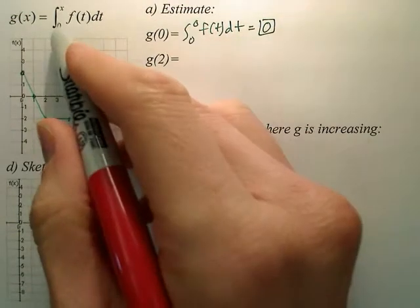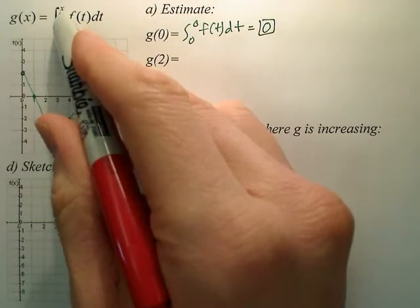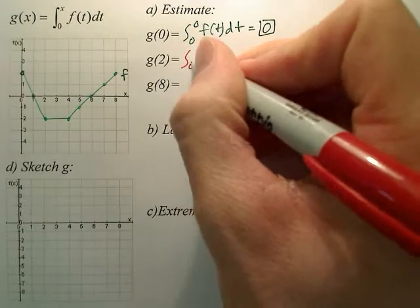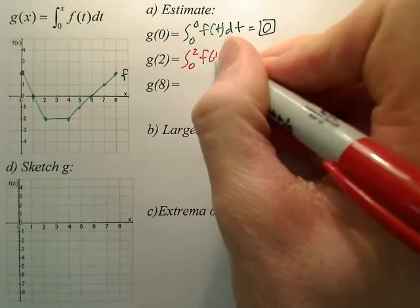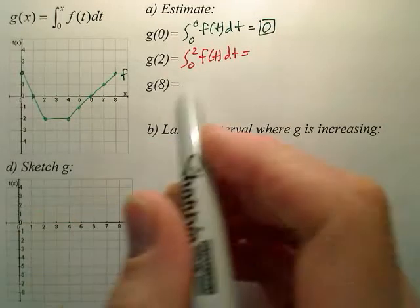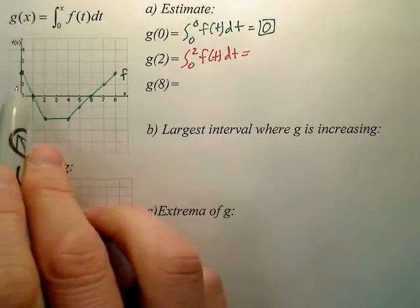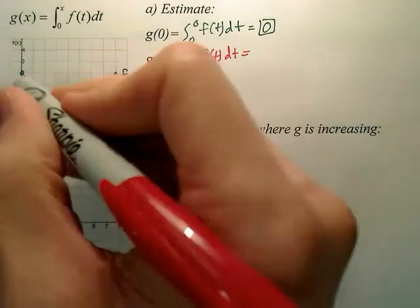For g of 2, we're simply going to put 2 right there and take the integral from 0 to 2 of f of t dt. So that would basically mean I'm taking the area of f from 0 to 2, so if you look at your graph,